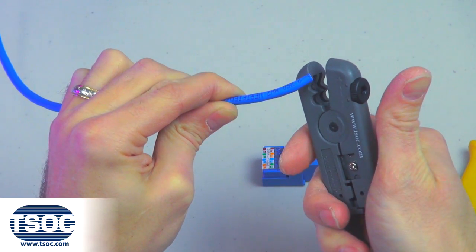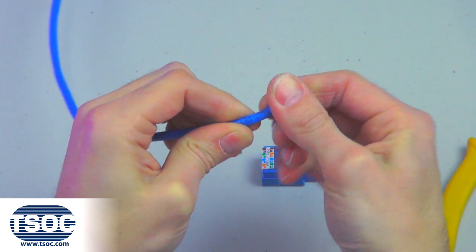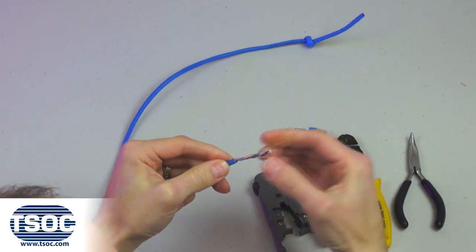Step 2. The CAT-5E UTP 4-Pair Cable will be scored. Remove the jacket exposing the eight insulated conductors and a nylon thread pull string.